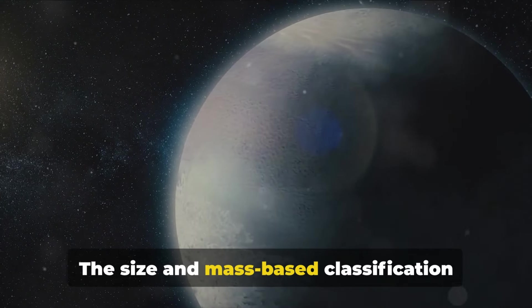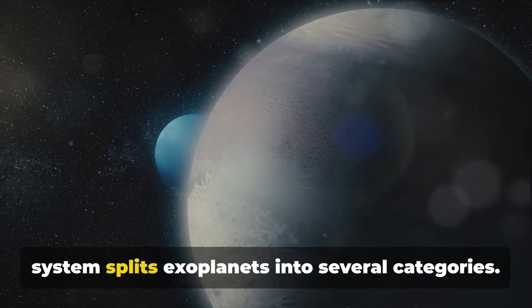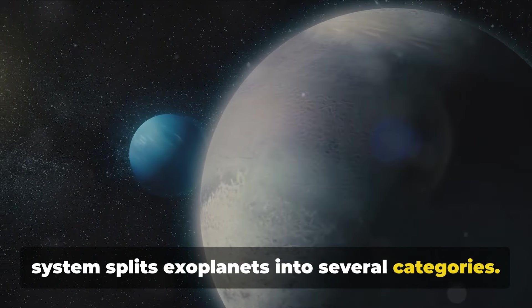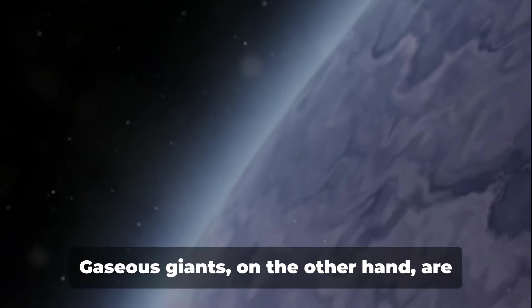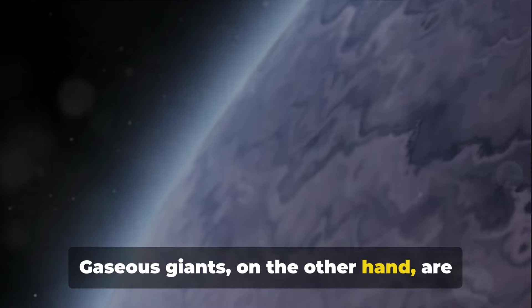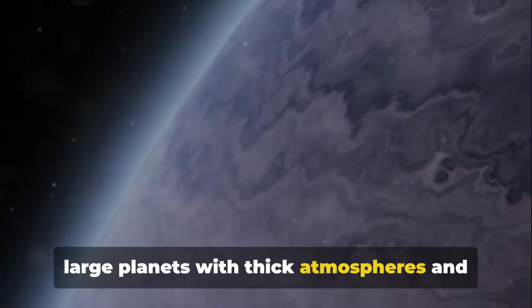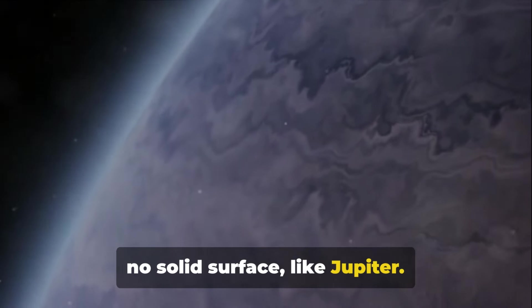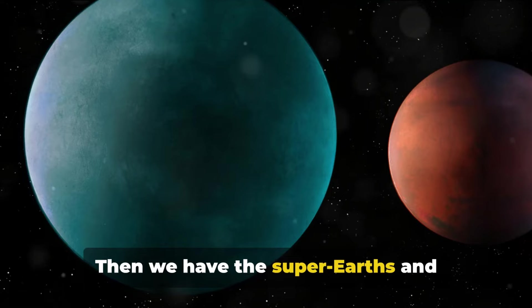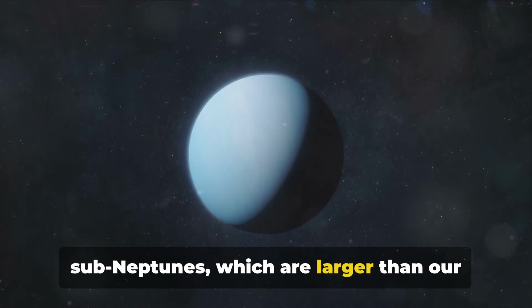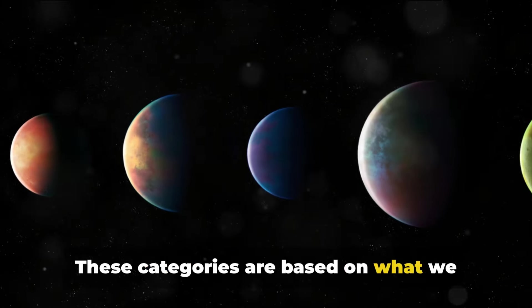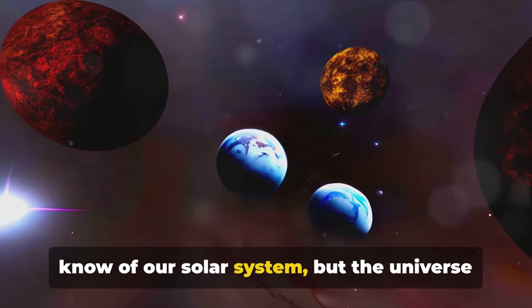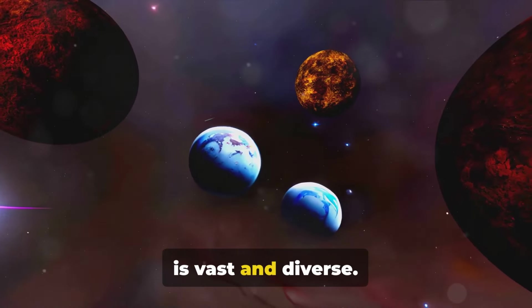The size and mass-based classification system splits exoplanets into several categories. Terrestrial planets like Earth are rocky and comparatively small. Gaseous giants, on the other hand, are large planets with thick atmospheres and no solid surface, like Jupiter. Then we have the super-Earths and sub-Neptunes, which are larger than our home planet, but smaller than Neptune.